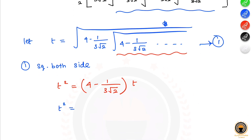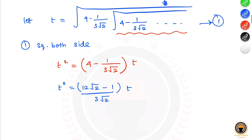So t squared is equal to (12 root 2 minus 1) divided by 3 root 2 into t. Cross multiplication is done: 3 root 2 t squared is equal to 12.